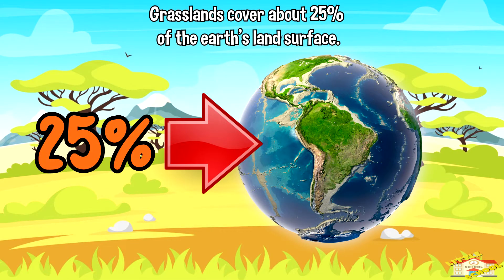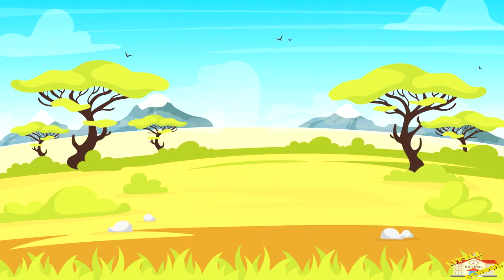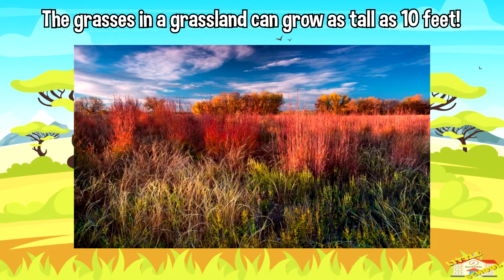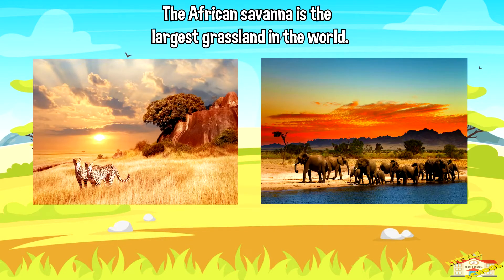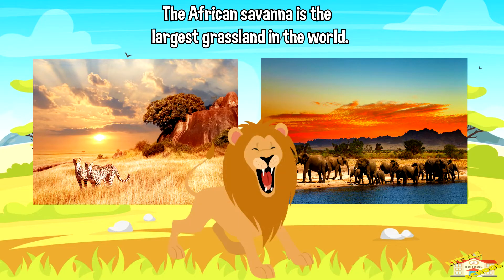Grasslands cover about 25 percent of the earth's land surface. The grasses in the grassland can grow as tall as 10 feet. The African savannah is the largest grassland in the world and it's home to many amazing animals such as lions.